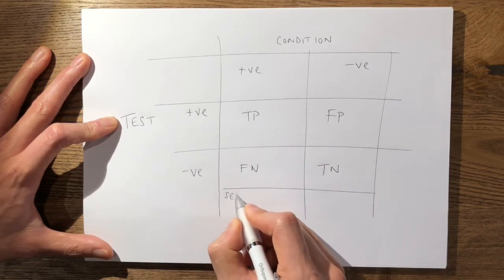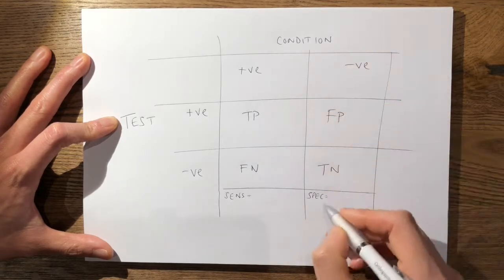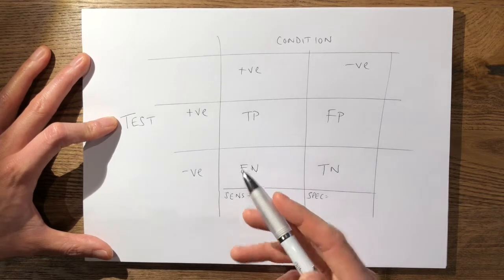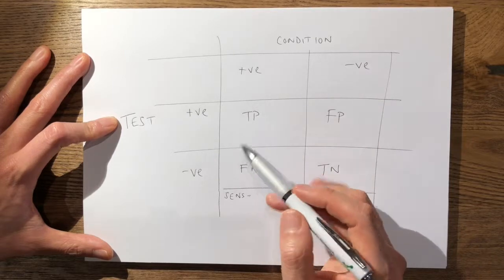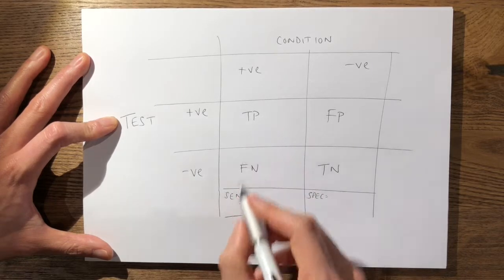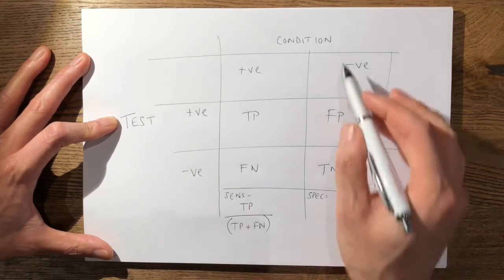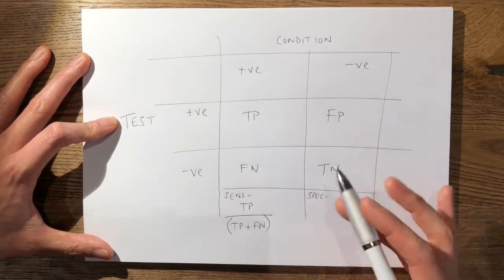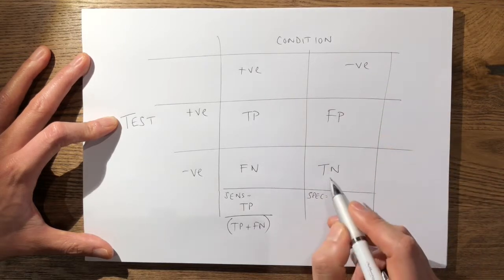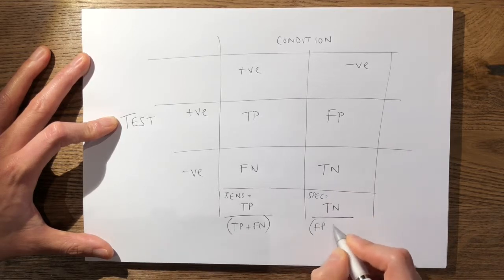Using the vertical column, you can work out the sensitivity and the specificity. The sensitivity is the probability that a test will be positive when the disease is present — your true positive rate. This is worked out by your true positives divided by your true positives plus your false negatives. Similarly, the specificity is the probability that a test result will be negative when the disease is not present — your true negative rate — worked out by your true negatives divided by your false positives plus your true negatives.